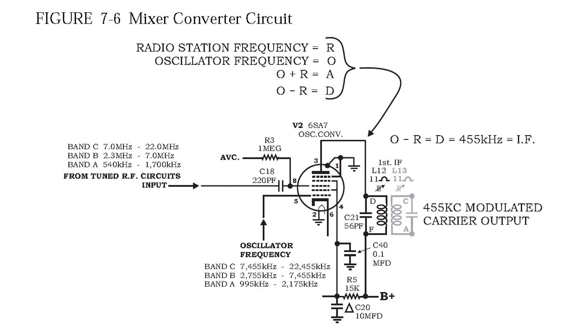I also want to point out in this drawing, about the middle on the left you'll see band A, that is the frequency for those stations on band A. Now if you go down underneath where I've got a list of the oscillator frequencies, band A starts at 995 kilohertz and runs to 2175 kilohertz. Well that's exactly 455 kilohertz above the radio station frequencies.